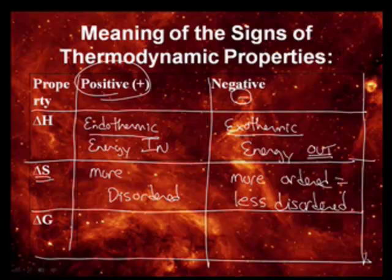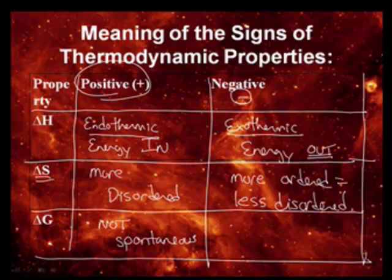Delta G is very important to understand. If it is positive, it is not spontaneous, which means it will not happen by itself. And if it's negative, it is spontaneous. It happens by itself, energy is going out. Dissolving sugar was a spontaneous process, so that is negative delta G. If you see something happen by itself, delta G is always negative. You see a chemical reaction take place and a precipitate form on its own, delta G is negative. It's simple as that.